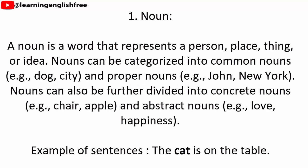1. Noun. A noun is a word that represents a person, place, thing, or idea. Nouns can be categorized into common nouns, e.g. dog, city, and proper nouns, e.g. John, New York. Nouns can also be further divided into concrete nouns, e.g. chair, apple, and abstract nouns, e.g. love, happiness. Example sentence: The cat is on the table.